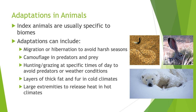Index animals can give you an idea of what biome you're actually in. Based on the adaptations those animals have, they can indicate the biome. For example, a polar bear would be found in the tundra biome because it has large amounts of fat and heavy fur to protect it from the cold, whereas a road runner would be found in the desert because of its adaptations.